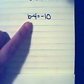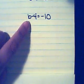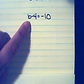So here I have b minus four equals negative ten. I want to isolate the b, so I want to get b on one side of this equation all by itself.